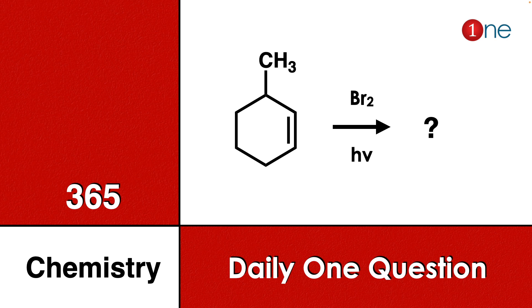Welcome to One Chemistry. This is the 365 Chemistry Series — daily one question for you. Here, cyclohexene with a methyl group at the third position is given. You are reacting it with bromine and light. You have to find what will be the major product.